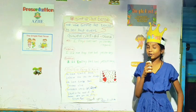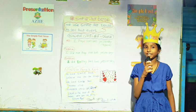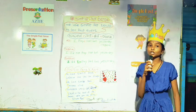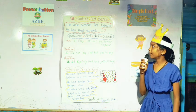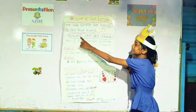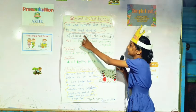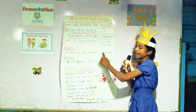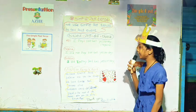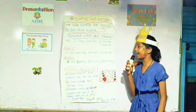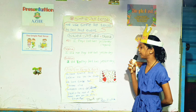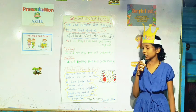Good evening everybody. My name is Nirutiva. I am going to tell about simple past tense. We use simple past tense to tell past events. Structure: subject plus verb plus did plus object. Example: I played football yesterday. Negative form: I did not play football yesterday. Question form: Did you play football yesterday?